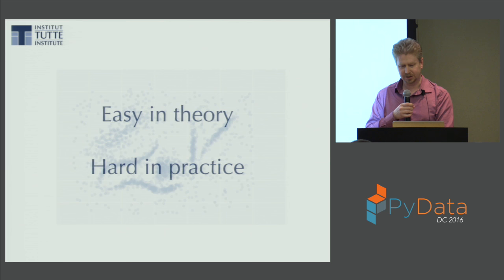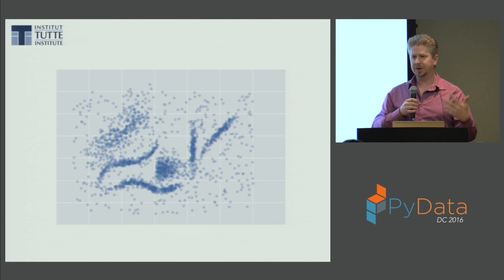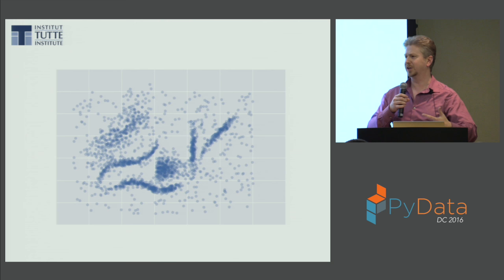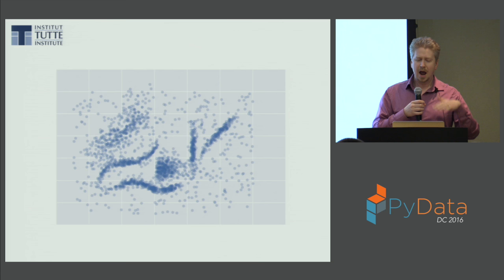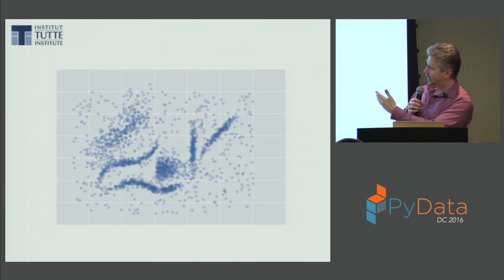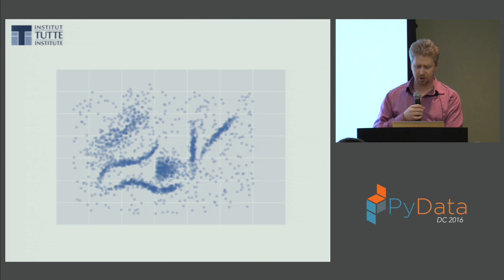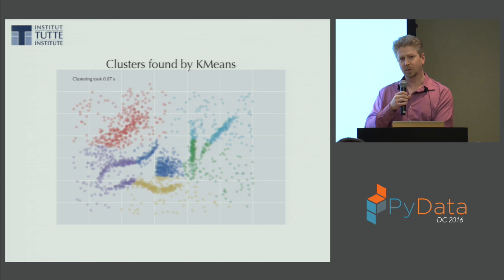We're going to walk through examples of what common clustering algorithms do on a two-dimensional data set. With two-dimensional data, the human eye is really good at clustering — we can look at it and immediately know what the clusters are. This lets your intuition align with what the algorithms are doing. You've probably already identified the clusters, so let's look at k-means — the first algorithm everyone learns.